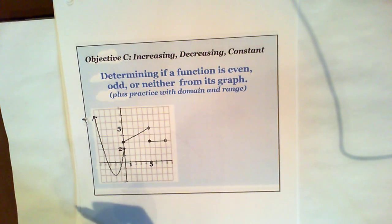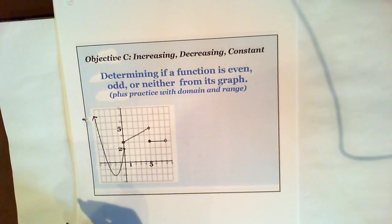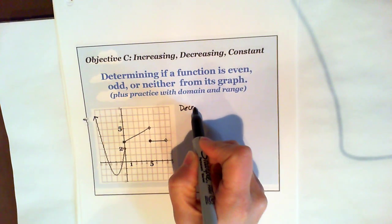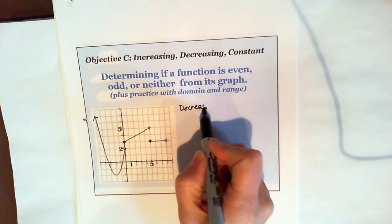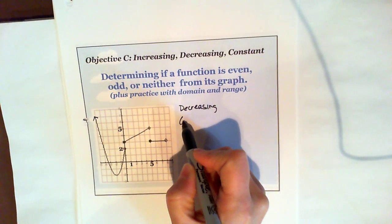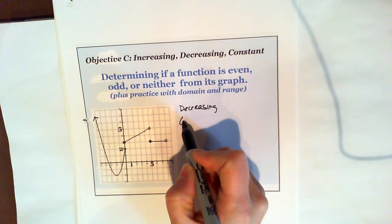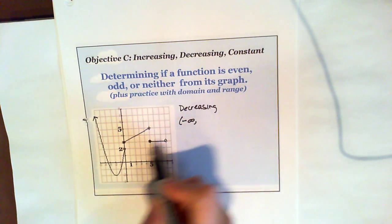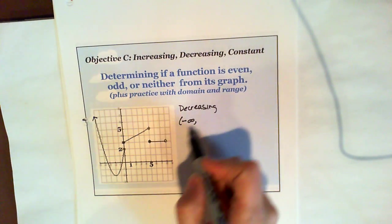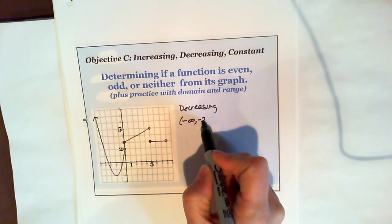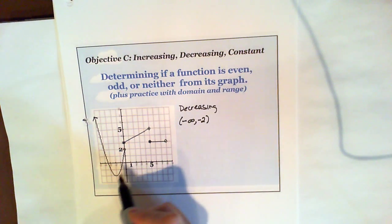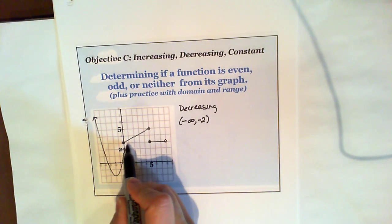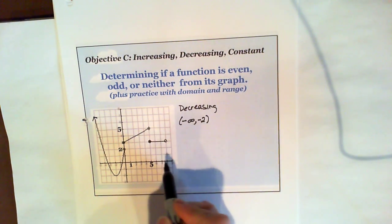So how far left does the function start decreasing? I'm going to put decreasing. How far left? It goes on and on, so I'm going to say negative infinity. And it stops decreasing — it looks like at negative two. And then if I keep going to the right, there's no other place where it decreases.